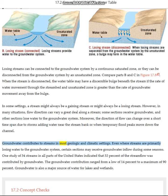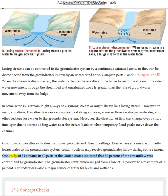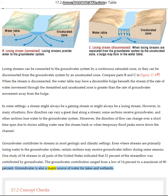Groundwater contributes to streams in most geologic and climatic settings. Even where streams are primarily losing water to the groundwater system, certain sections may receive groundwater inflow during some seasons. One study of 54 streams in all parts of the United States indicated that 52% of the stream flow was contributed by groundwater. The groundwater contribution ranged from a low of 14% to a maximum of 90%.